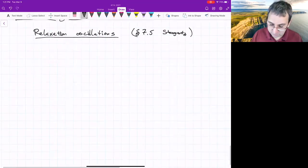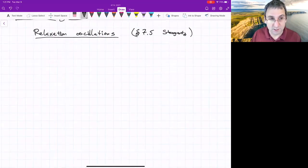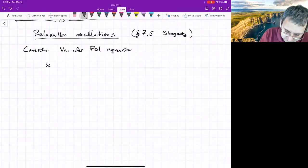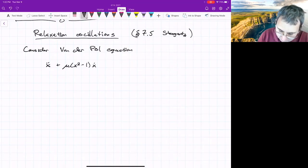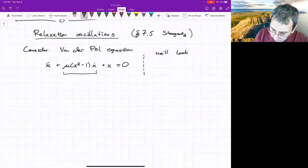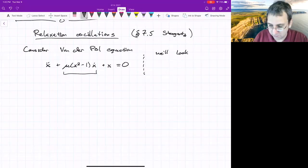So the Van der Pol equation shows relaxation oscillations, and that's what we're going to use as an example to consider. So the Van der Pol equation, we've seen it before. It's written this way. There's this nonlinear term, and we'll look in the strongly nonlinear limit. Strongly nonlinear limit means that this term is very important. So mu much greater than 1.